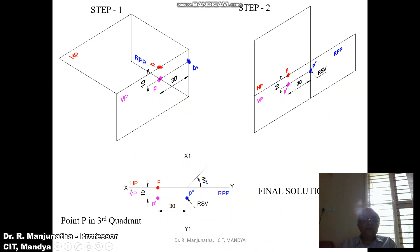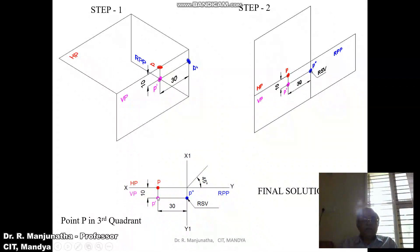For the final solution in the sketchbook: draw the XY line and X1Y1 line, and mark HP, VP, and RPP. Measure the distance 30mm behind RPP, which is seen in both VP and HP — mark this distance and draw a vertical projector as a thin line. The point p is below HP by 10mm, so VP is below the XY line — mark P dash. Since the point is on VP, it falls on HP and should be on the XY line, marking small p.